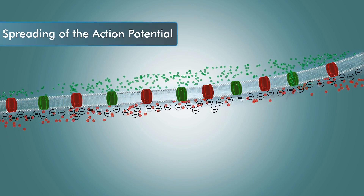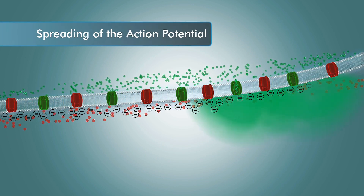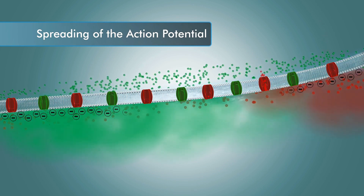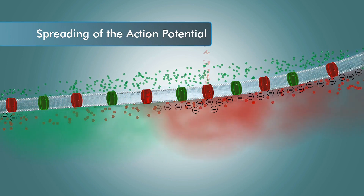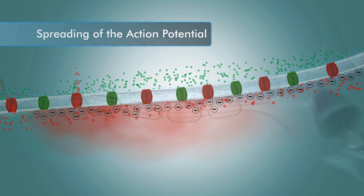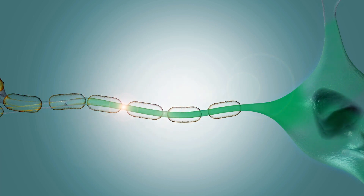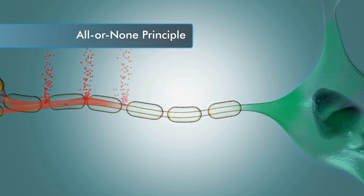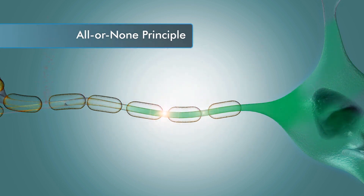The depolarization of one area of the cell membrane causes neighboring voltage-gated sodium and potassium channels to reach their threshold. The result is the action potential spreads like a wave across the entire cell membrane. Once the action potential begins, all of the output zone will depolarize and repolarize. This is known as the all-or-none principle.